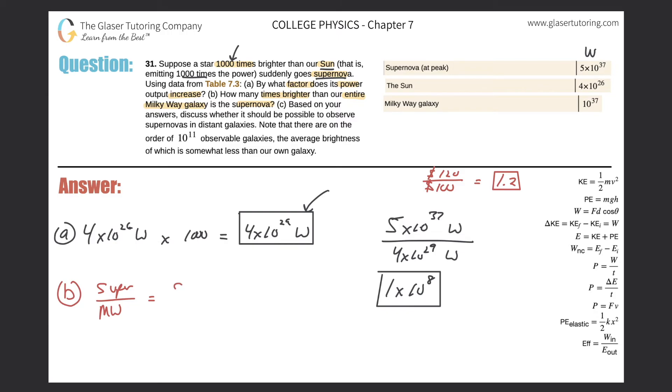So let's take the value of the supernova, which was 5 times 10 to the 37th, and divide that then by 10 to the 37th. And notice they'll both cancel, and this leaves us with a factor of five.